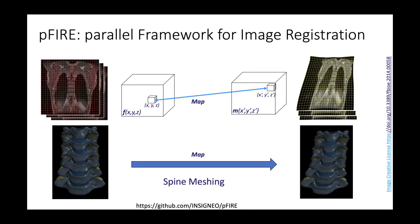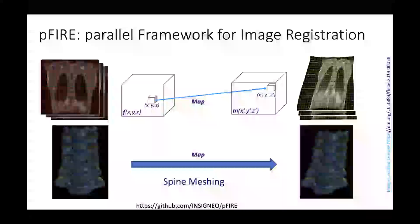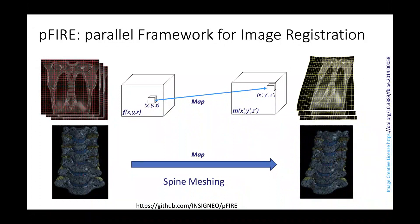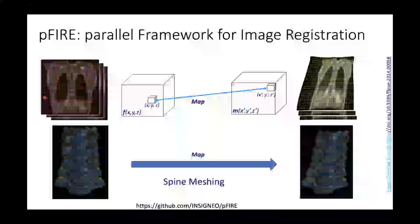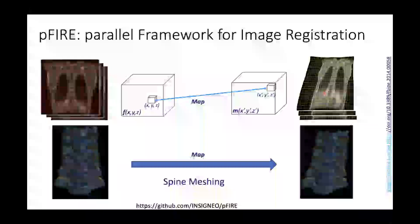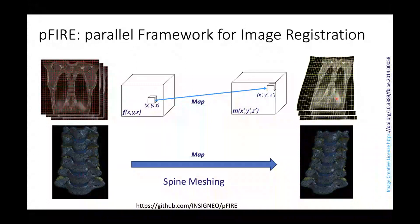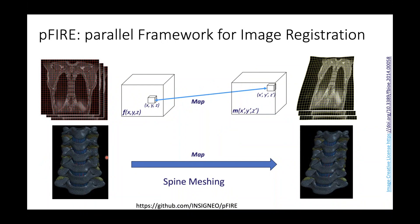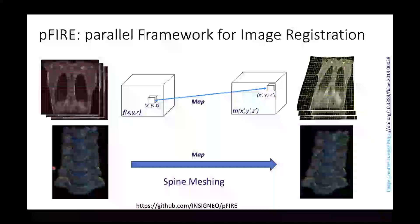In the CompBioMed project, we containerised one application — a parallel framework for image registration. Image registration is the process of finding a mathematical function that maps two images. One image is the fixed image (the starting image) and the other has gone through some modification — for example, if the patient moved during acquisition of an MRI scan. You find the function that maps the two images so you can overlap any misaligned acquisition onto the original one.